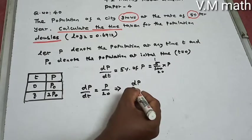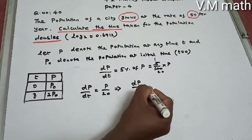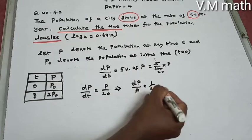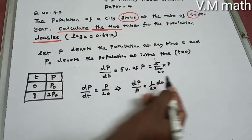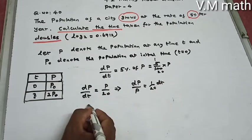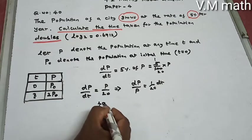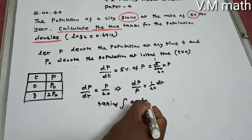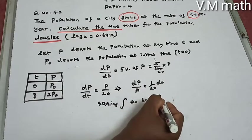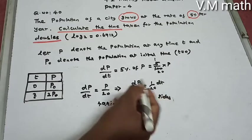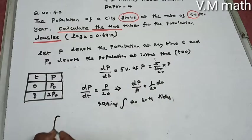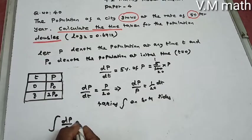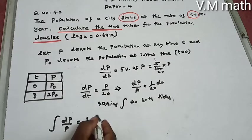Separating variables: dP divided by P equals 1 by 20 times dt. Taking integration on both sides: integral of dP by P equals 1 by 20 times integral of dt.